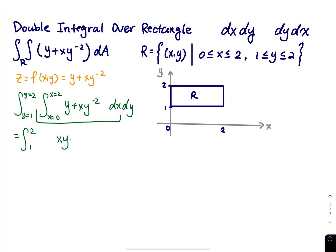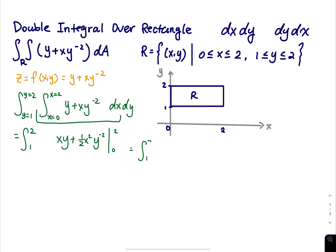Since we're integrating with respect to x, y is treated as a constant. The integral of y with respect to x is xy, and the integral of x times y to the negative 2 is one-half x squared times y to the negative 2. We evaluate from x equals 0 to x equals 2, plugging in 2 gives 2y plus 2 times y to the negative 2.